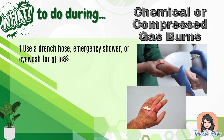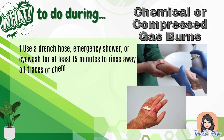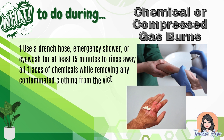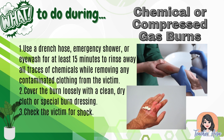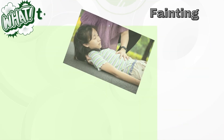What to do during chemical or compressed gas burns: one, use a drench hose, emergency shower, or eye wash for at least 15 minutes to rinse away all traces of chemicals while removing any contaminated clothing from the victim; two, cover the burn loosely with a clean dry cloth or special burn dressing; three, check the victim for shock.